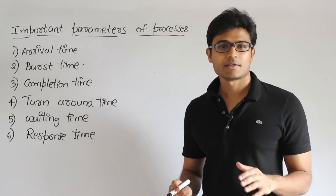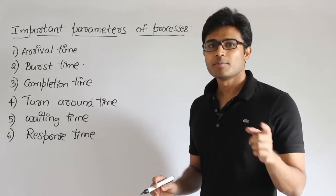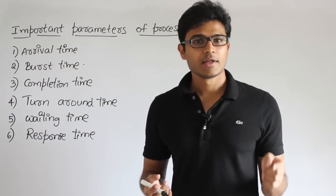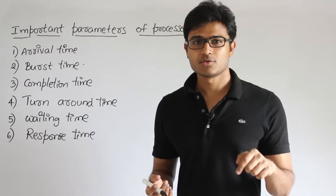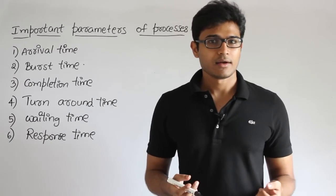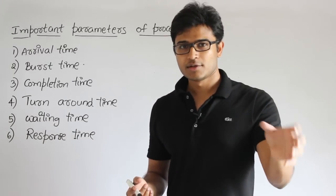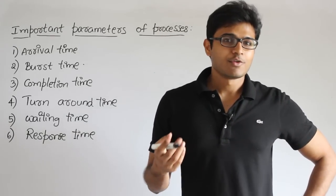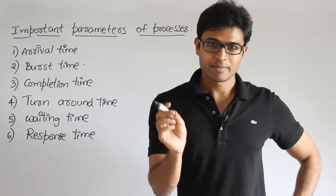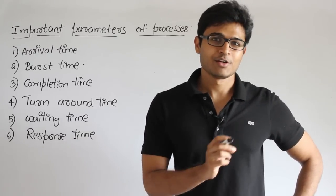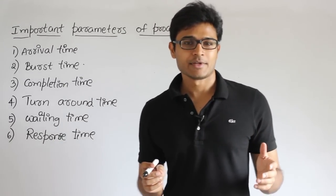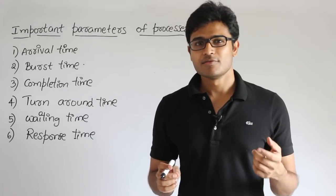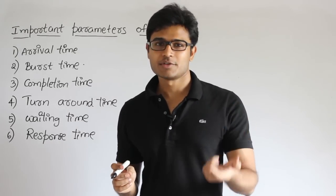The next parameter is burst time. Burst time is the amount of CPU time required by a process to finish execution. How much CPU time should you dedicate to this process so that it could get completed? Many scheduling methods are based on burst time, but we cannot implement them in reality because we will not have burst time before we start executing the process.